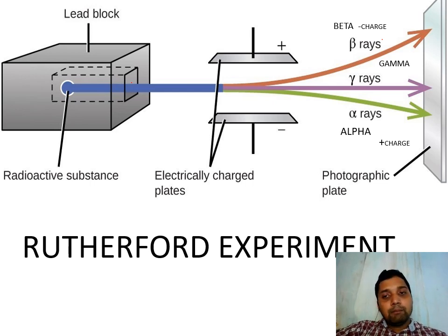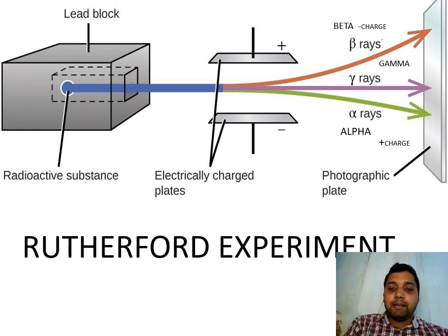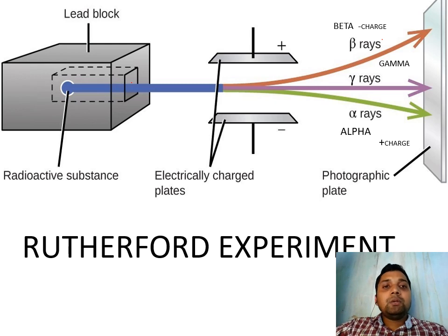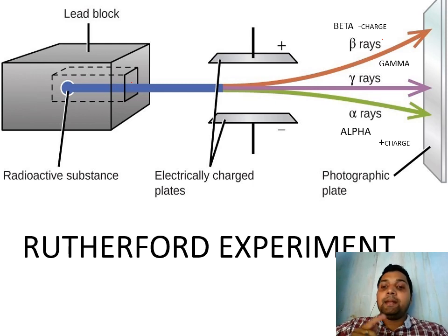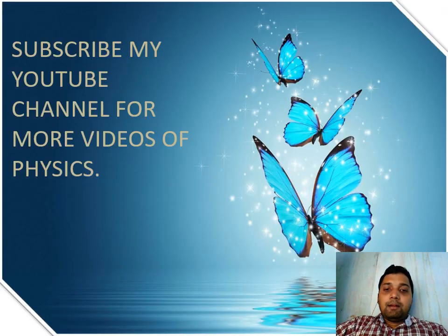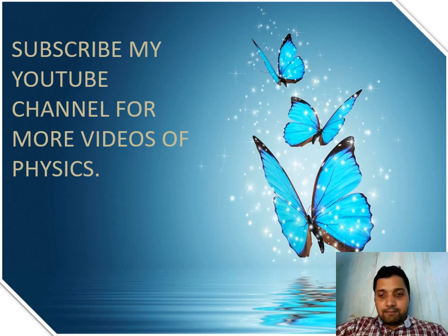In our next video we are going to discuss more characteristics of alpha, beta, and gamma — what changes occur in the nucleus when it emits an alpha particle or a beta particle, and whether it is possible for an element with atomic number less than 83 to be radioactive. Wait for the next video. Subscribe to my channel for more updates and videos of physics for ICSE. Like my videos and leave your comments in the comment box. Thank you.